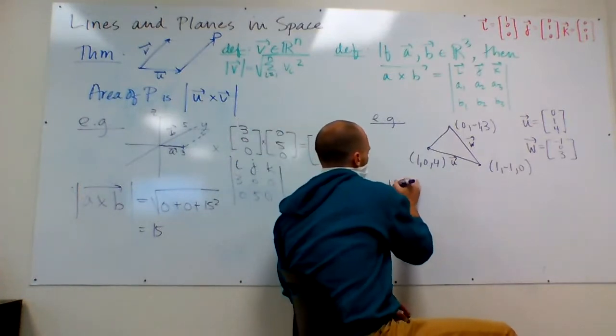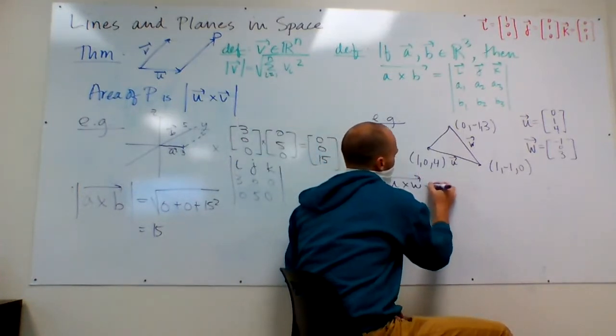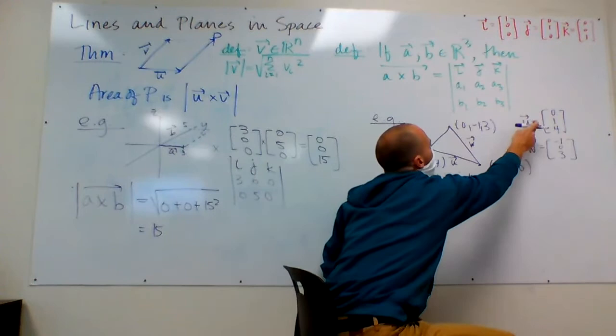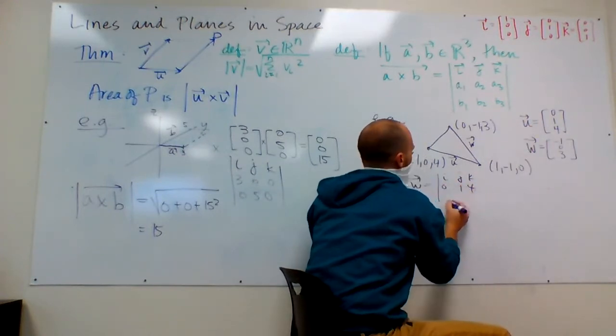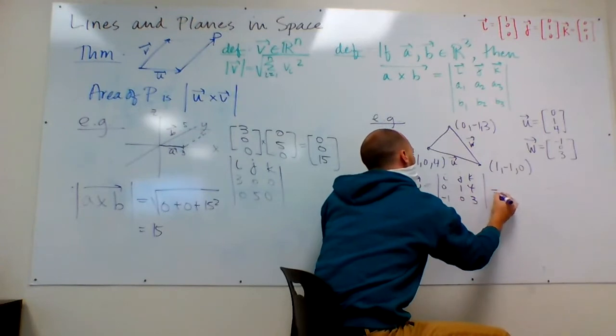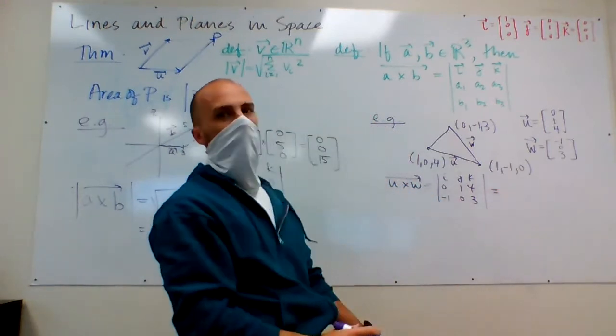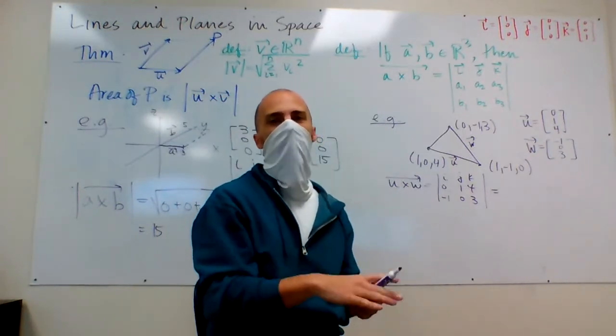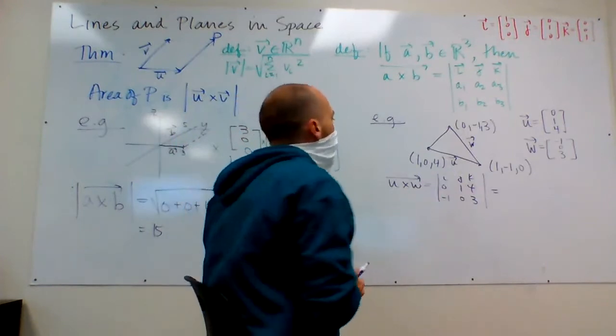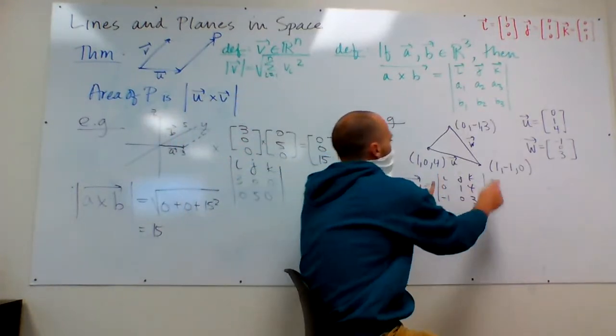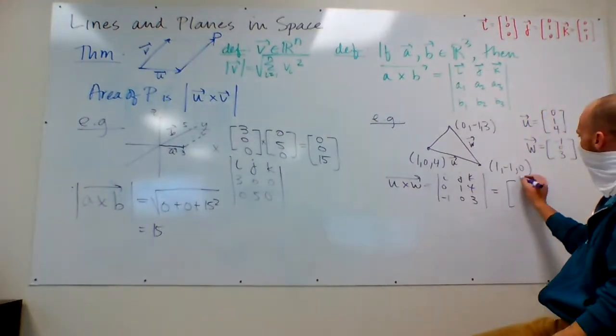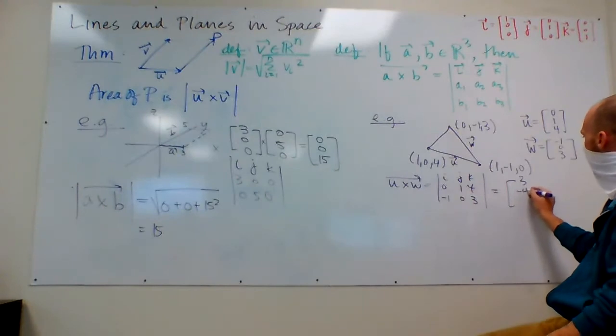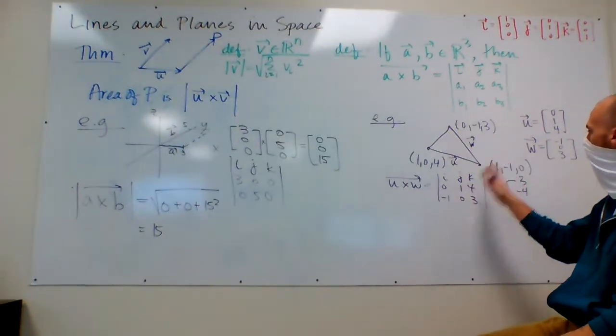Okay, so U crossed with W is equal to the determinant of I, J, and K, zero, one, four, and negative one, zero, three. And while I'm doing this calculation, I'm going to remark that it doesn't matter if you do U crossed with W, or W crossed with U, because we're taking the length of that vector, and so if it's just the negative of the other one, it's kind of the same length, right, so it'll be fine. All right, anyway, so I've got 3 minus 0 on the I front, on J, I've got negative of 0 minus negative 4, and plus K times 0 minus negative 1.